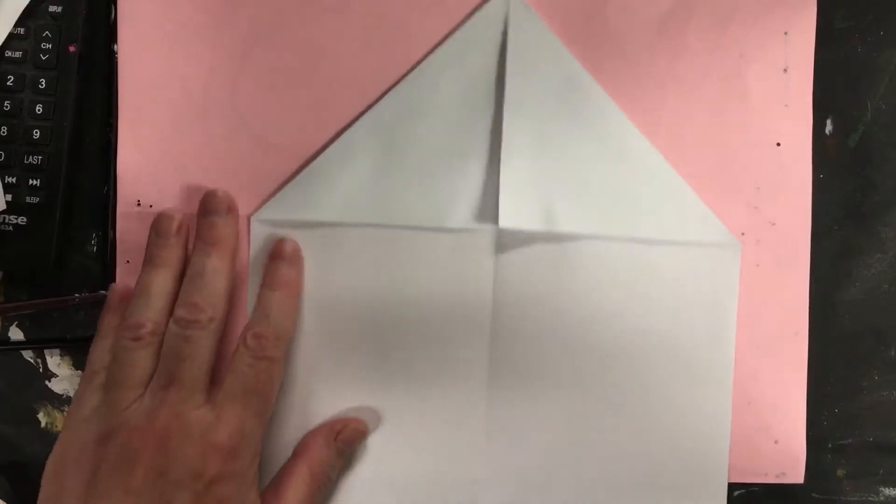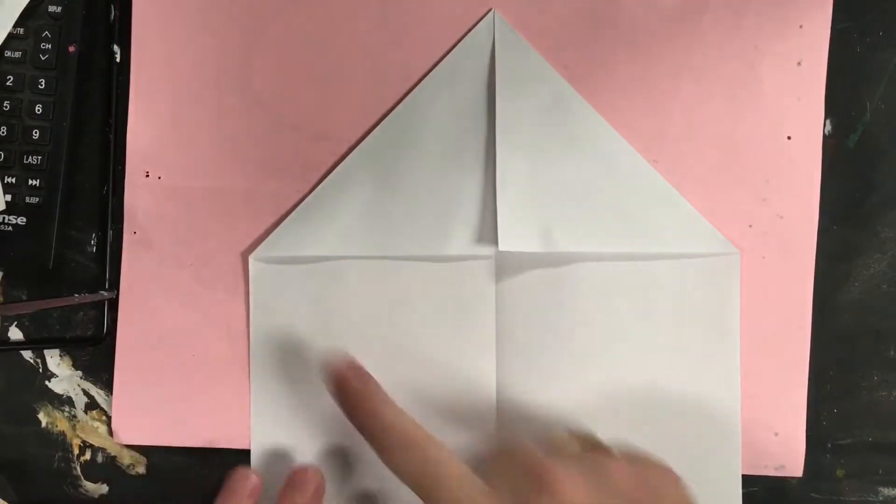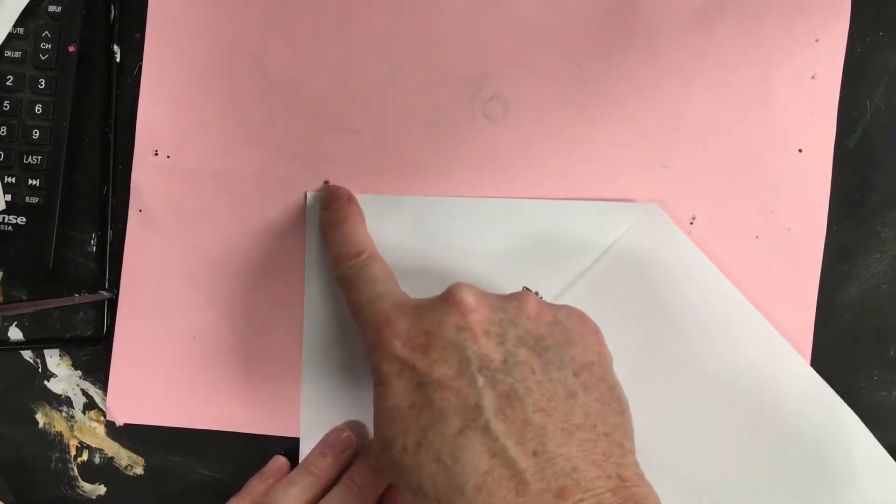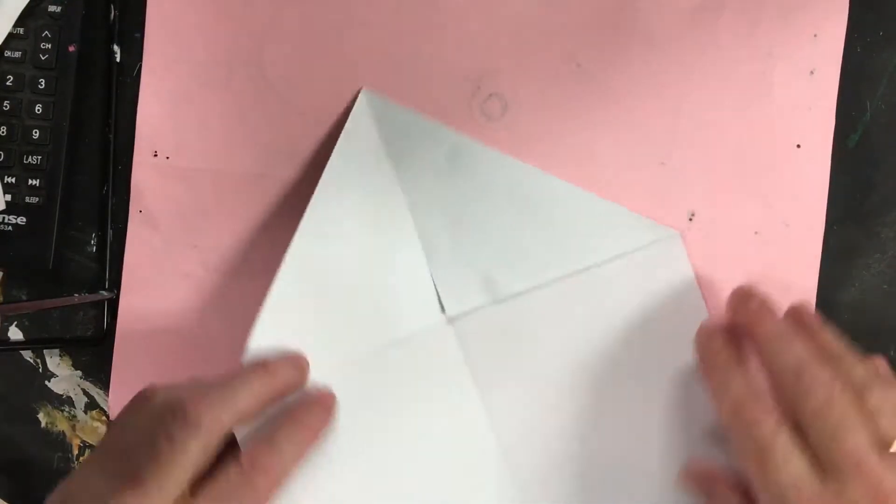It now should look like almost like the roof of a house. This forms a right angle right here. So if you're going to measure angles, that's a perfect right angle.